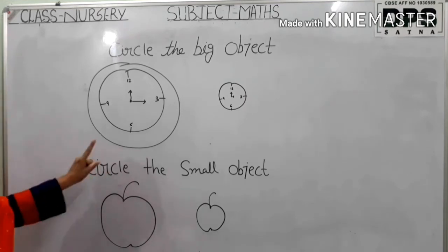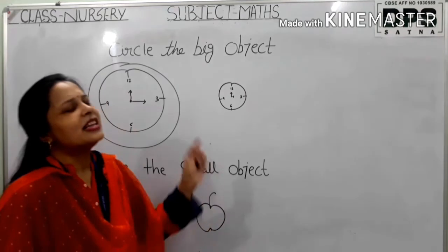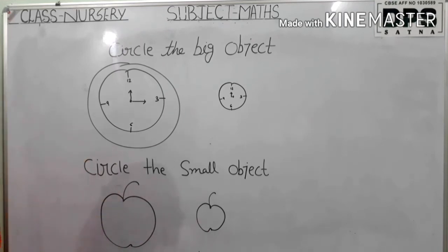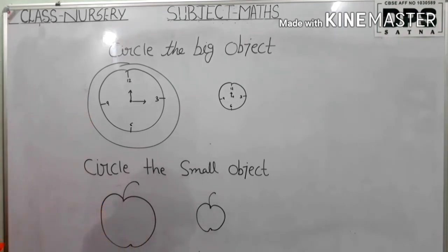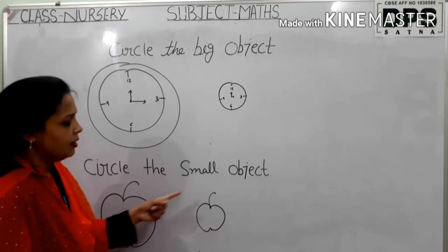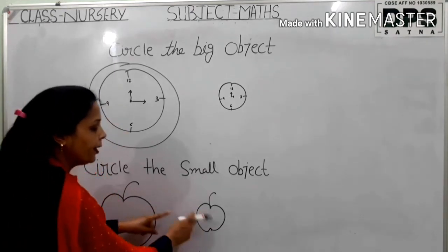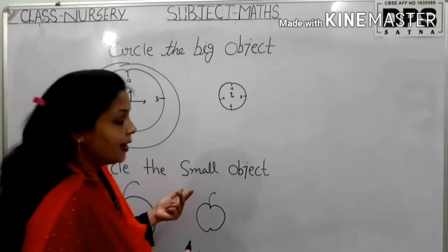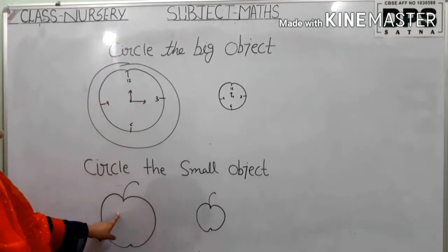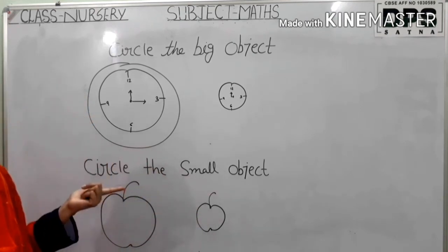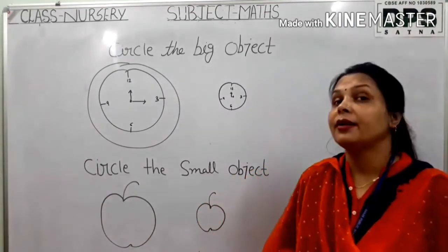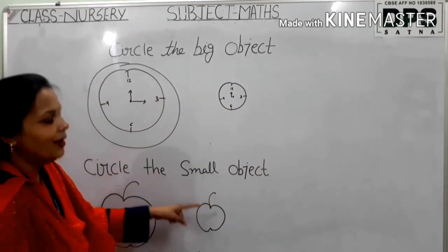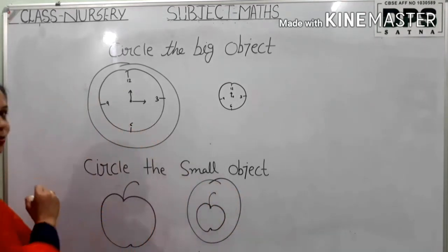Next. Look here. Circle the small object. Now in which one do you circle? The small one. What object has been drawn here? Apple. And what is the color of the apple? Red color. Look here — this is an apple, and here is also one apple. Now you have to compare the two. Which one is big? Which one is small? This is big and this one is small. So we have to circle the small apple. Now circle it — this is small.